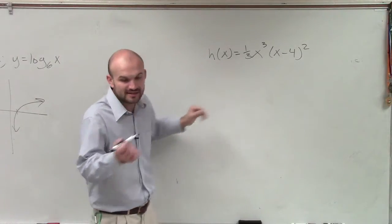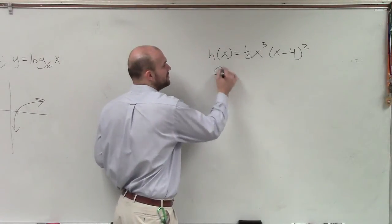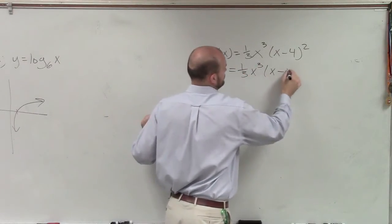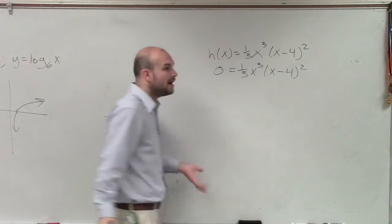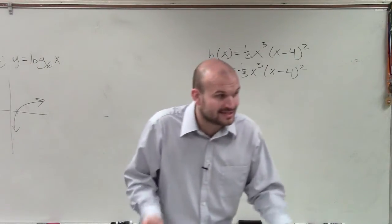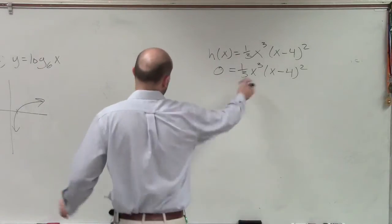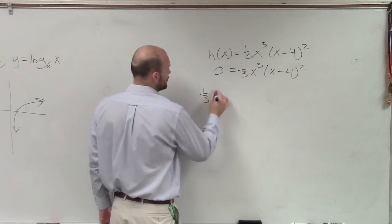If I just want to find the zeros, the first thing I do is I take my output and I set it equal to zero. Now, since I already have it as a product equal to zero, to find the zeros, I don't even have to apply any mathematics. I can just now apply the zero product property.